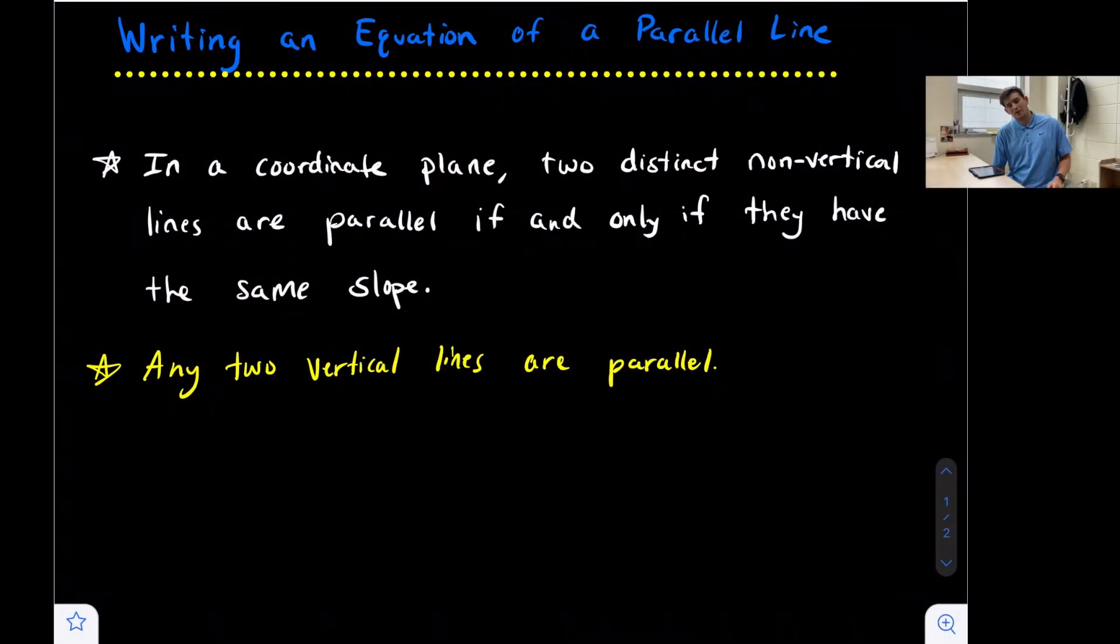In this video, we're going to look at how to write an equation of a parallel line. First, we need to understand that in a coordinate plane, two distinct non-vertical lines are parallel if and only if they have the same slope.